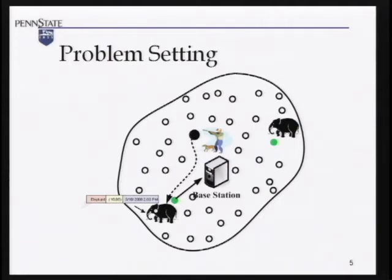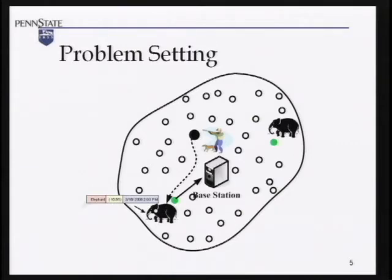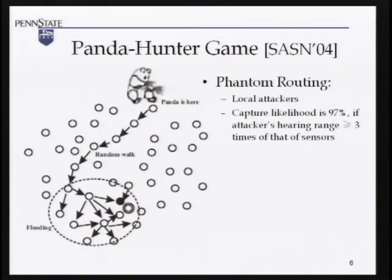For this specific talk, I will focus on this problem. There is a base station, some animals, and a hunter. The sensors monitor the environment and report what they detect. If a sensor knows there's an elephant nearby, it sends a message containing three parts: the event type — the elephant — the location, and the timestamp of when the elephant was detected. This information is sent back to the base station. But a hunter may leverage this information to trace back to the source and find where the elephant is.